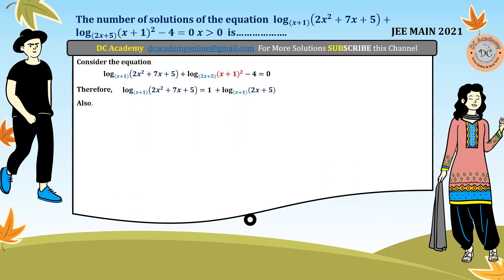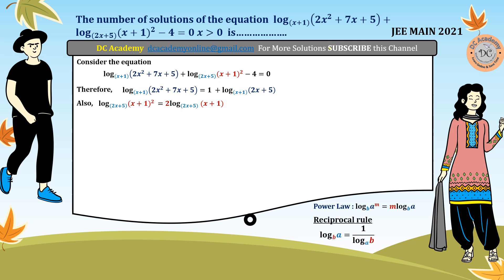To simplify log of (x+1)² with base (2x+5), we first apply the power law: log(a^m) = m·log(a). So this becomes 2·log(x+1) with base (2x+5). Now, since our previous expression has base (x+1), we use the reciprocal rule: log(a) base b = 1 / log(b) base a. Applying this, we get 2 / log(2x+5) with base (x+1).